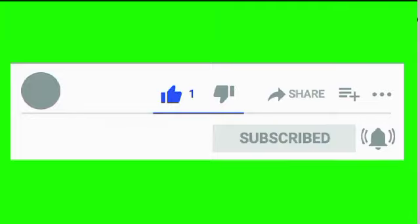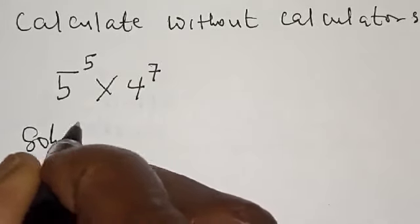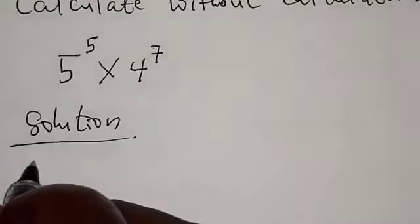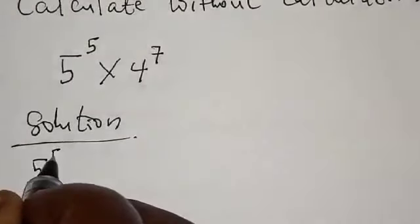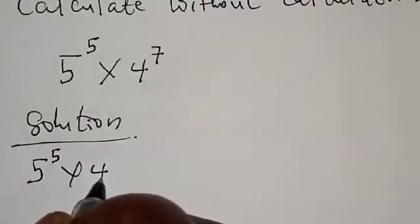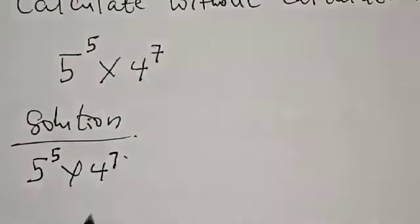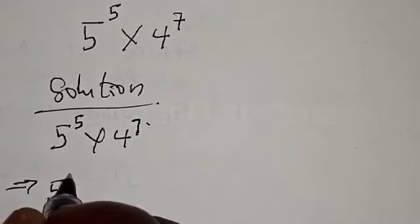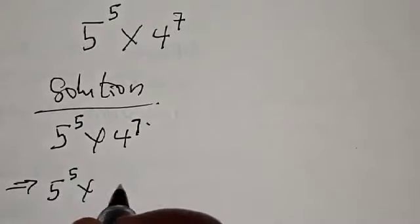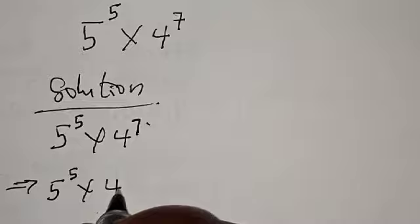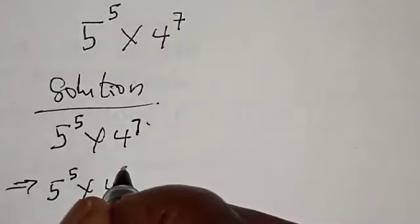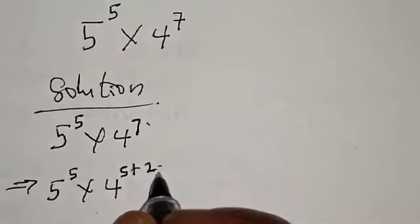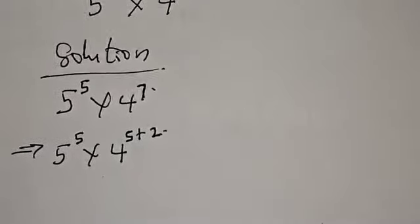Solution: we have 5 raised to power 5 multiplied by 4 raised to power 7. This can be expressed by rewriting 4 raised to power 7 as 4 raised to power 5 plus 2, since 5 plus 2 equals 7.